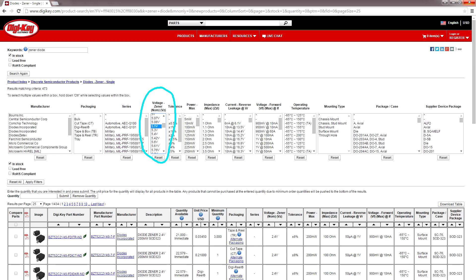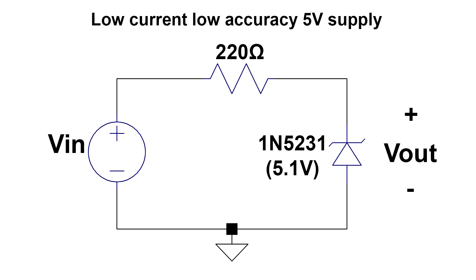So that was an example with a 3.3 volt Zener diode, but you can get them with all kinds of Zener voltages. Now I want to show you an example with a 5.1 volt Zener diode, and how you can use it as a crude voltage regulator.